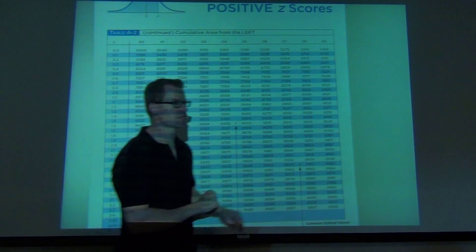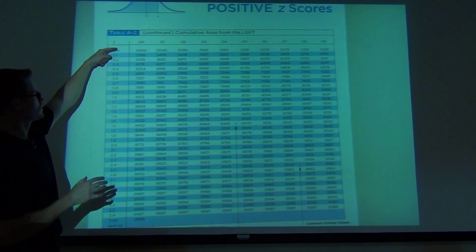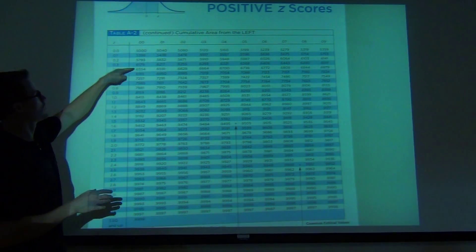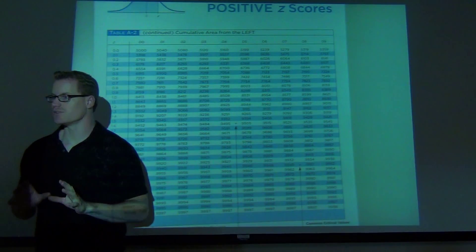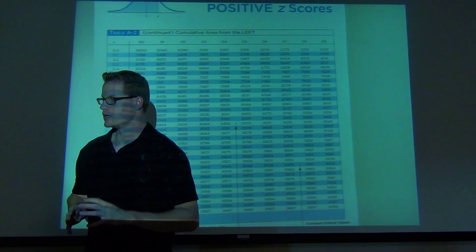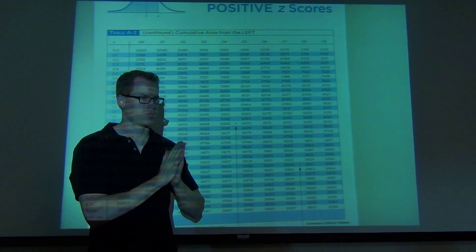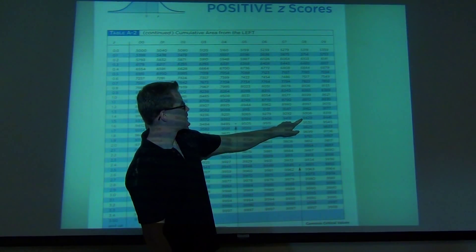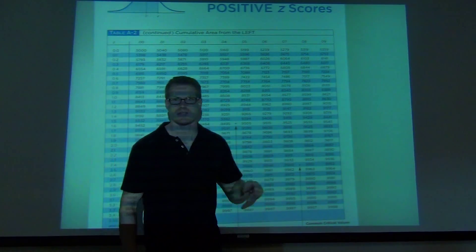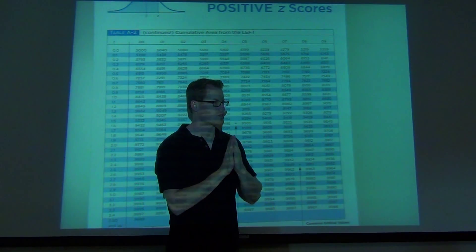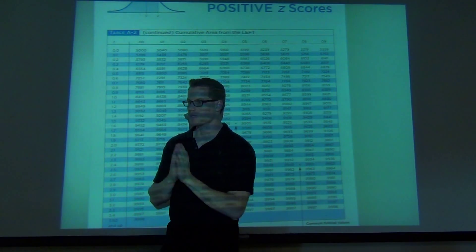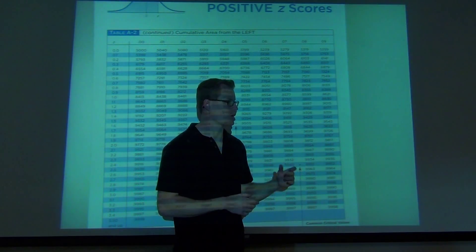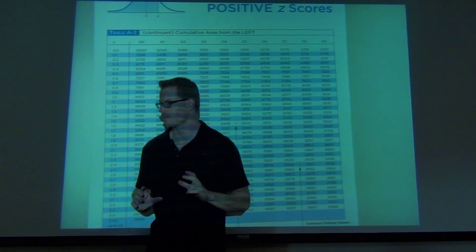Okay, so that's how we look up Z scores. Any Z score can be done the same way. If I wanted 0.43, I'd go to 0.4 over to 3. What this is giving you is an area to the left of that number, to the left of that Z score. In our case, our area is 0.9429, or 94.29% of the area is to the left.